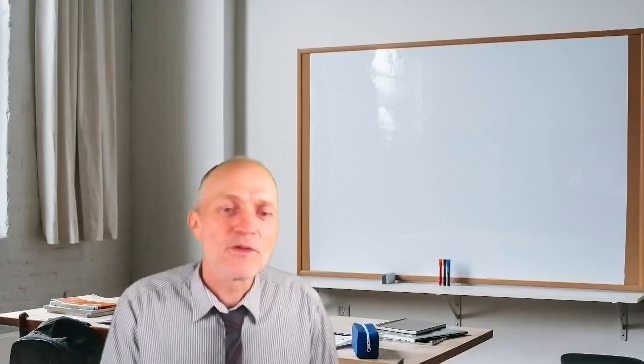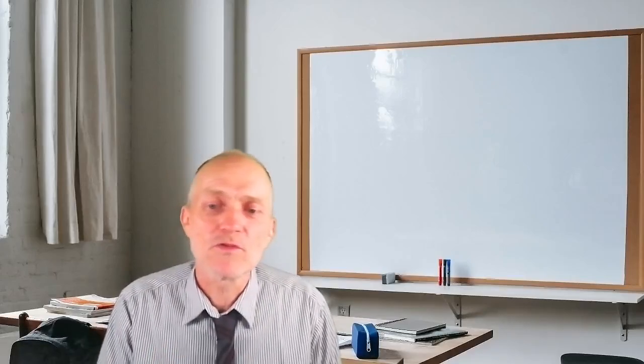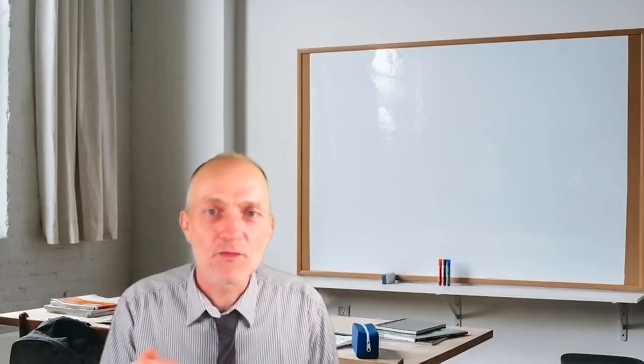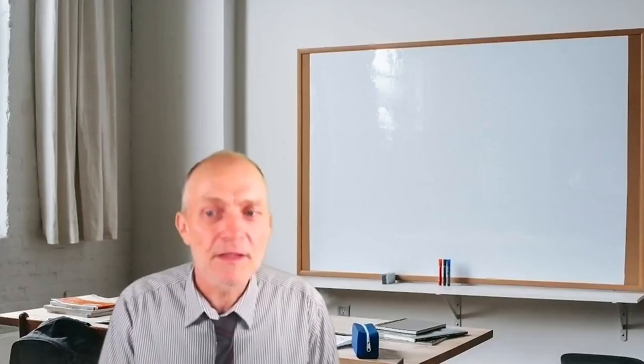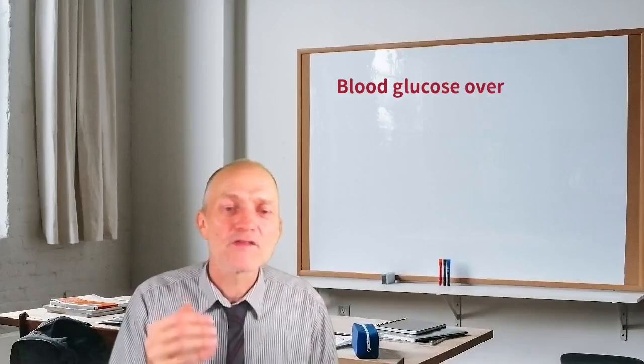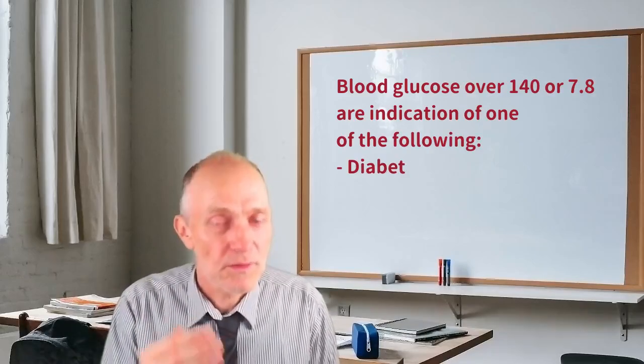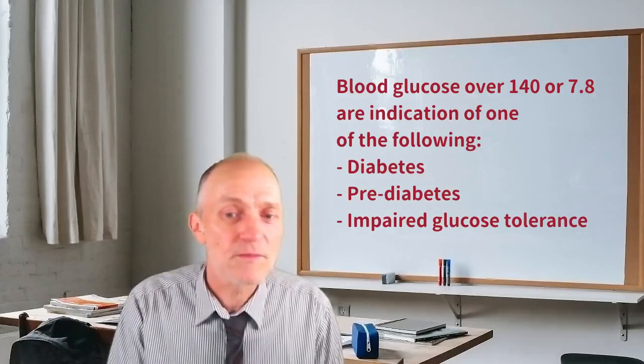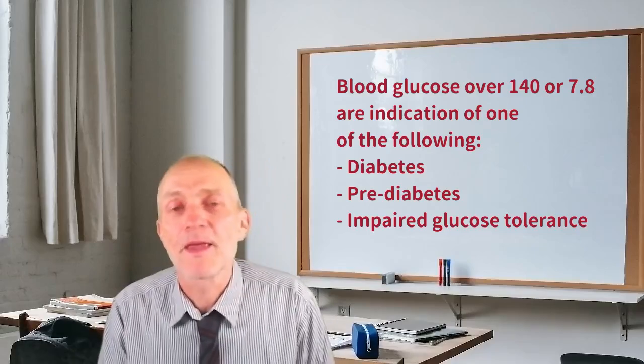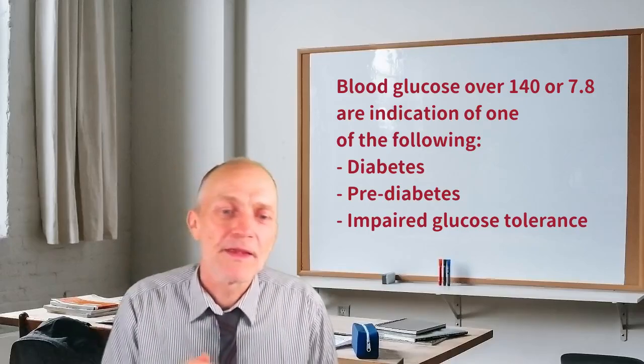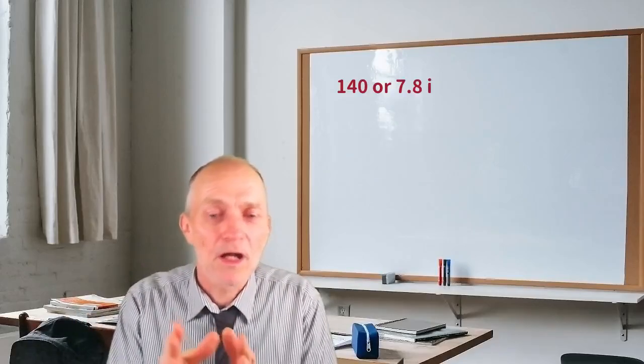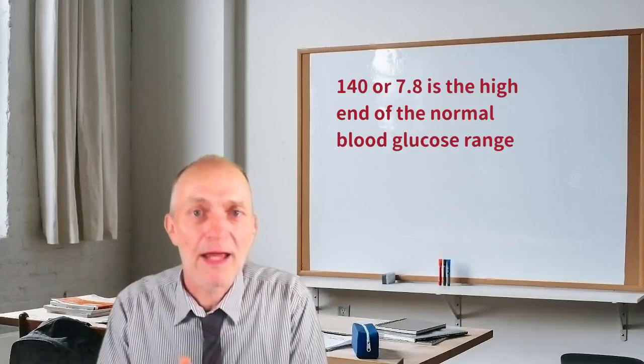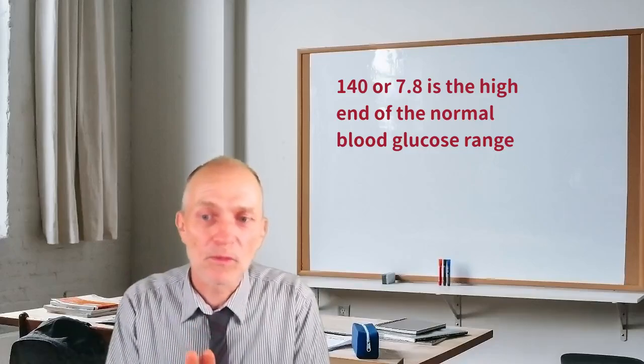You should know that in medicine, blood glucose values over 140 mg per deciliter, or over 7.8 after eating, are seen as a possible indication of diabetes, pre-diabetes, or impaired glucose tolerance. So at the high end, the answer is quite simple. 140 is the high end of the normal range.